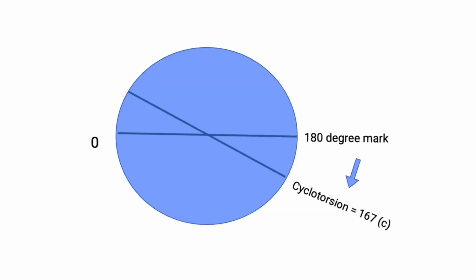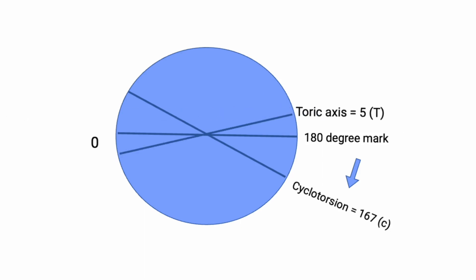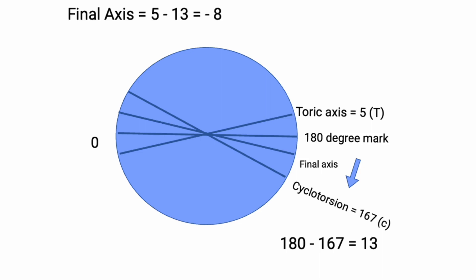There is also a scenario where the TORIC axis can dip below the 180° mark. In this situation, even if we take the difference between 180 and cyclotorsion and subtract it from the TORIC axis value, we arrive at a minus integer. So we have to add 180 to this minus integer to get the final axis to use on the app.